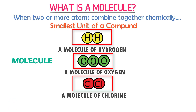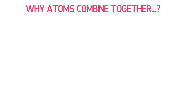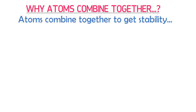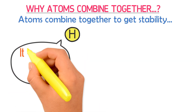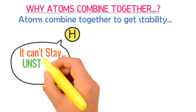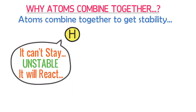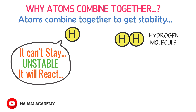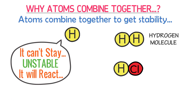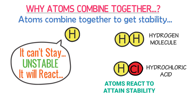The second important question is: why do atoms combine together? Why shouldn't they exist independently? The answer is atoms combine together to get stability. For example, a single atom of hydrogen cannot stay independently — it is unstable. To get stability, it will react with a nearby atom. It may react with another hydrogen atom to form a hydrogen molecule, or it may react with a nearby chlorine atom to form HCl, a molecule of hydrochloric acid. Remember that atoms react with one another in order to attain stability.